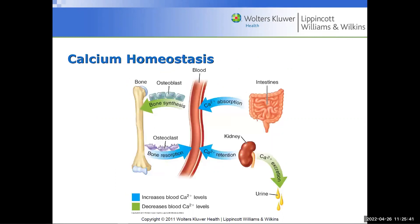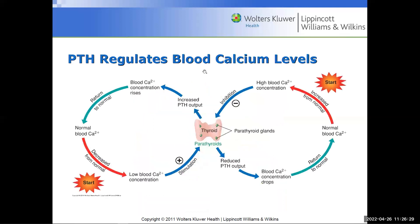Now let's talk about calcium homeostasis. Homeostasis comes from the Greek: 'homo' meaning same and 'stasis' meaning state — the maintenance of a constant internal environment. In terms of calcium homeostasis: calcium is absorbed from food into the blood, then osteoblasts build it up into bone. When calcium levels are low, osteoclasts return that calcium back into the bloodstream.